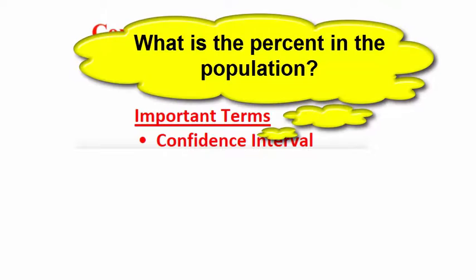A confidence interval is really an educated guess about some parameter, in this case a population proportion or percentage. So we're trying to make an educated guess, or guesstimate if you will, about a population percentage based on a sample percentage.